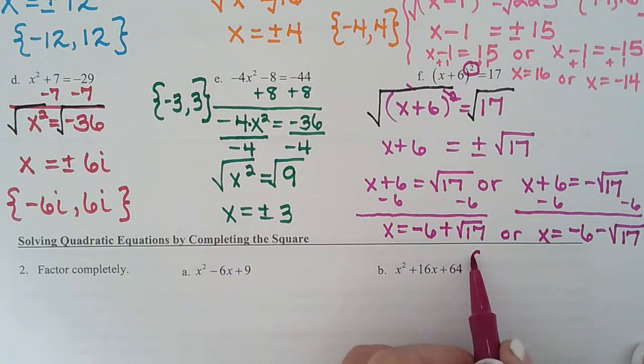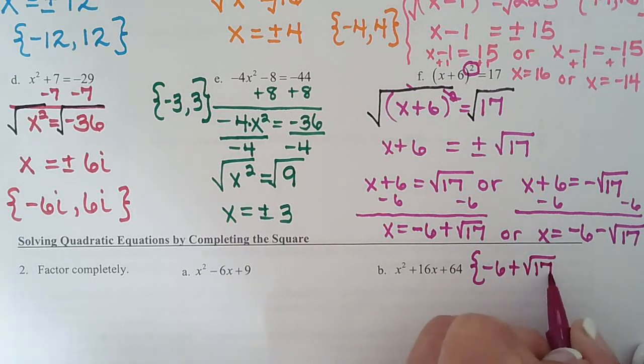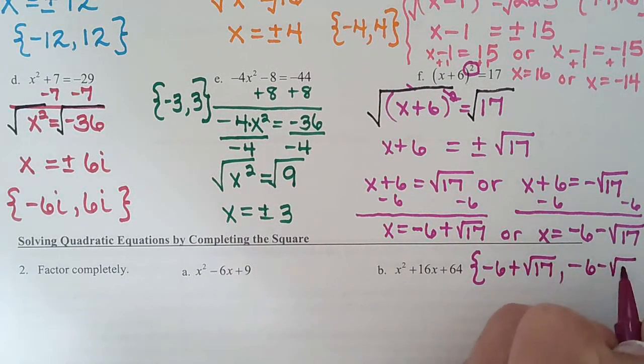When you write your two answers in solution sets, you write negative 6 plus rad 17, comma, negative 6 minus rad 17.